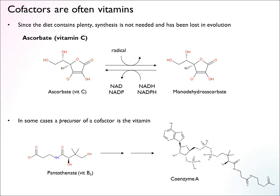In some cases the actual cofactor is the vitamin, and in other cases the precursor of an important cofactor is the vitamin. Coenzyme A is an example: there is a synthesis pathway for coenzyme A, but humans cannot make it from scratch. The vitamin is pantothenate — vitamin B5 — which you can recognize as a structural part of the coenzyme A molecule. We have a synthesis pathway that can add on a purine, a ribose, and a couple of phosphates to modify pantothenate and make coenzyme A. So again, this is a cofactor that has effectively become a vitamin because there is very little demand for it and the diet usually contains plenty of pantothenate.